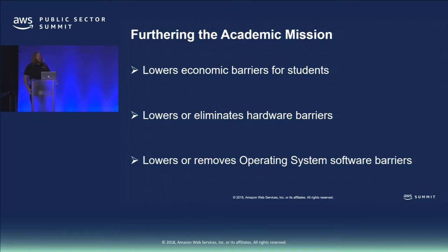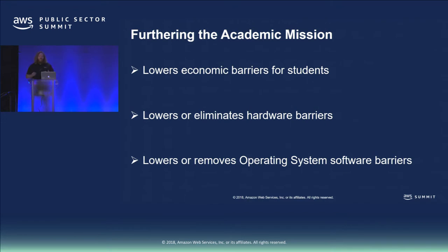AppStream also eliminates hardware barriers. We have hardware labs on campus with a four-year hardware refresh cycle, and a new version of software will immediately need a new graphics card or RAM upgrade. With AppStream, you can get GPUs, RAM, and CPUs whenever you want. It also lowers OS and software barriers — a lot of apps students get free through student licensing are Windows apps, but all of them have MacBooks. You could set up Parallels, but let's just use AppStream through a web browser and give them their apps.